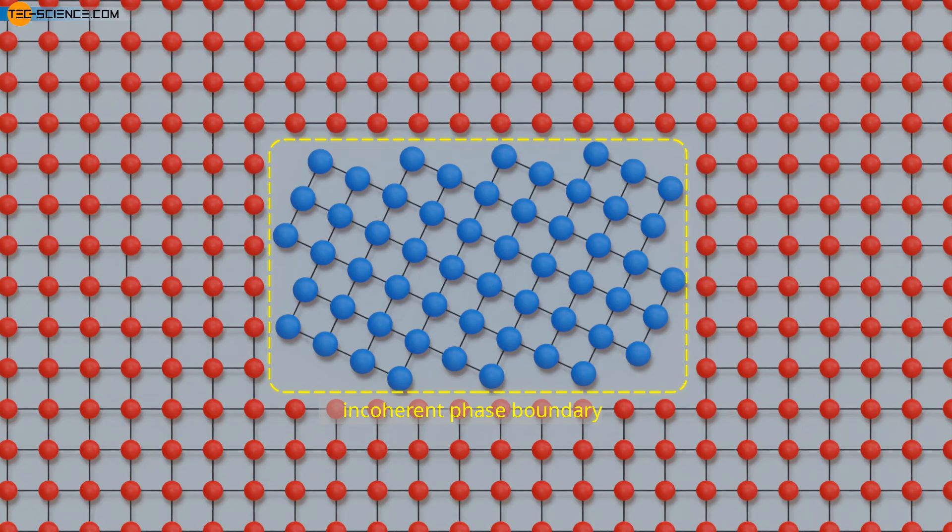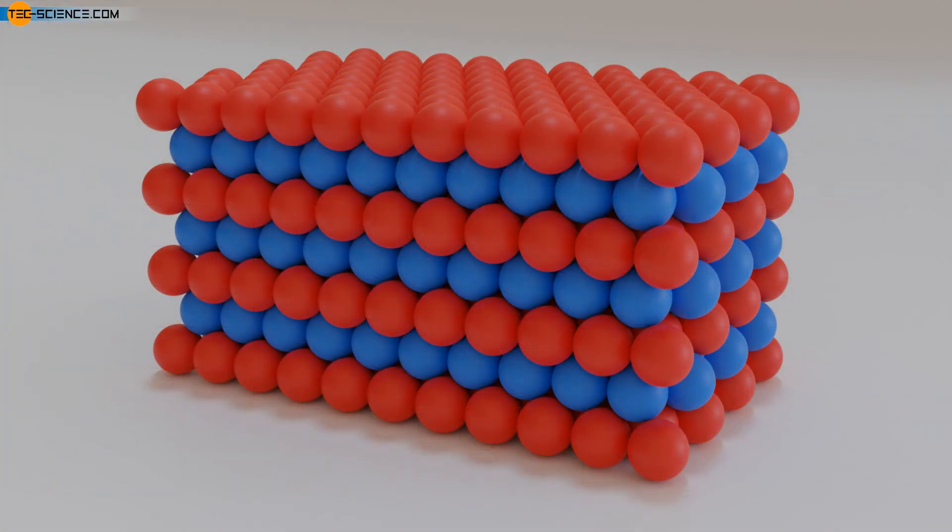Another two-dimensional defect is the so-called stacking fault. This is a locally deviating stacking sequence of the otherwise periodically arranged atomic planes. For example, the stacking sequence of the closest packed planes in the hexagonal lattice, which is normally AB, AB and so on, may locally have the order ABC. Such stacking faults can occur when a dislocation splits into two smaller dislocations.